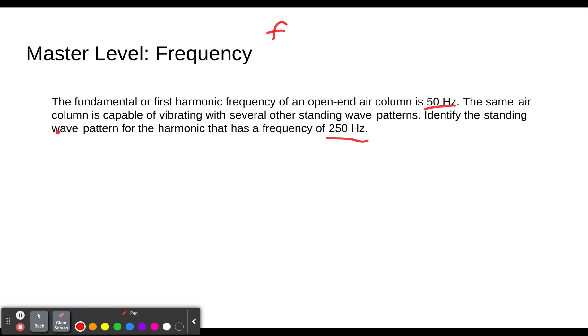So we remember our equation, Fn equals n times F1. If we want to solve for the harmonic, which is n, then we have to get it by itself. So we divide both sides by F1. So we have n equals Fn over F1. We plug in our numbers. Fn for whatever harmonic this is, the frequency is 250 hertz. We have 50 hertz for our first harmonic. And so we get 5. 250 divided by 50 is 5. So that means this is the 5th harmonic.